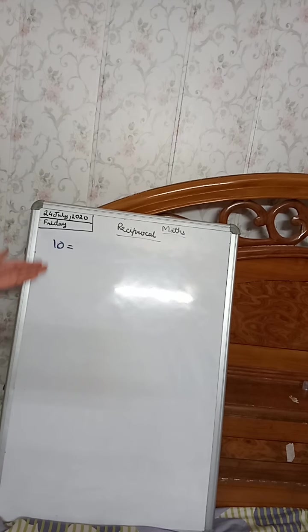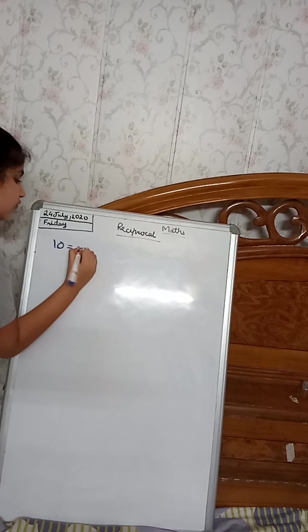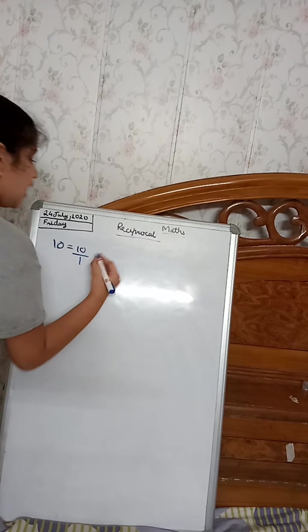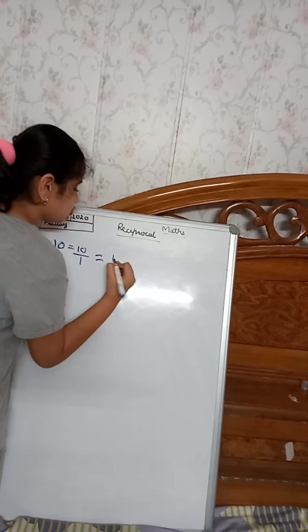So first we have to make it a fraction. Now, what I will do? I will just put 1 here in the denominator. Then the fraction will be 10 by 1. Now we can easily convert into a reciprocal. How can we convert? Just we have to switch.